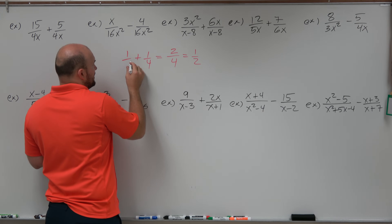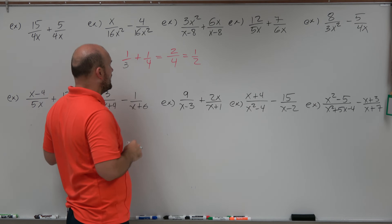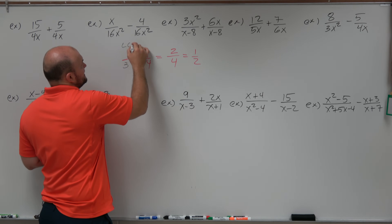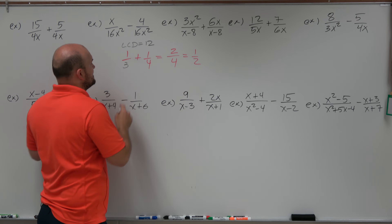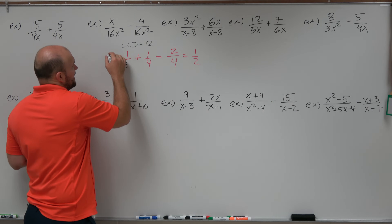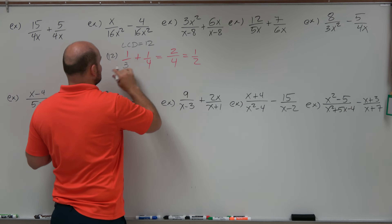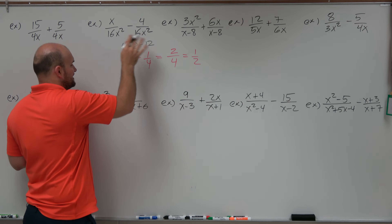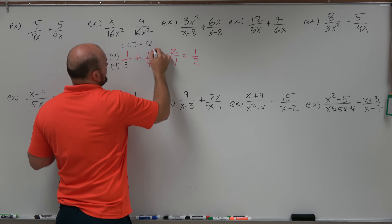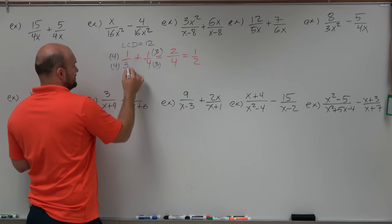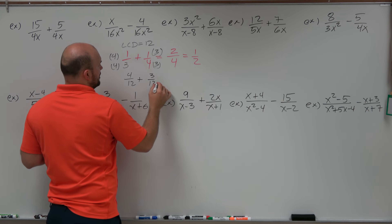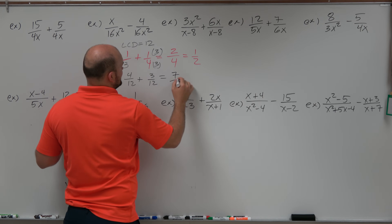What happens if we have different denominators? Then we have to determine what the least common denominator is — a number that both denominators divide into, the smallest of those. We want to multiply by whatever values are going to give us our LCD. So in this case, I'd have 4 over 12 plus 3 over 12. Now they have common denominators, and I can add.